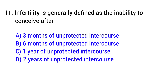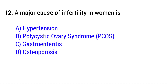Question number 11: Infertility is generally defined as the inability to conceive after — the right answer is Option C: One year of unprotected intercourse. Question number 12: A major cause of infertility in women is — the right answer is Option B: Polycystic ovary syndrome (PCOS).